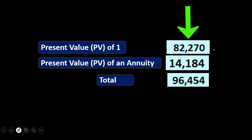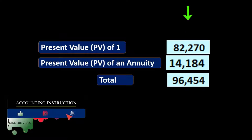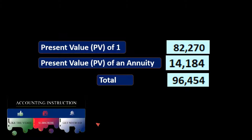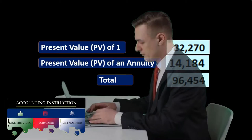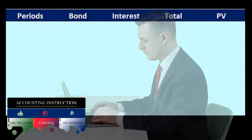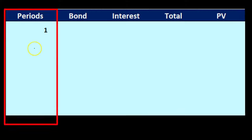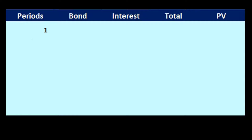Adding our two components: the present value of the $100,000 face value ($82,270) plus the present value of the payments ($14,184) equals a bond price of $96,454. We can also demonstrate this a different way in Excel — by present valuing each individual time period — which gives a different angle on what's happening. We'll set up the number of periods and the cash flow at each period.